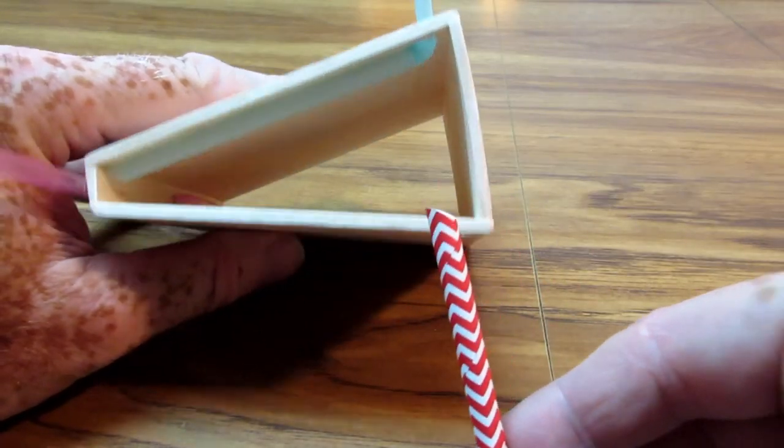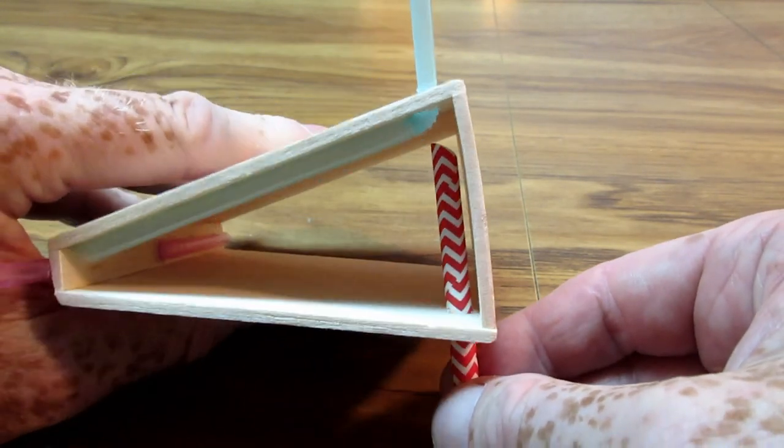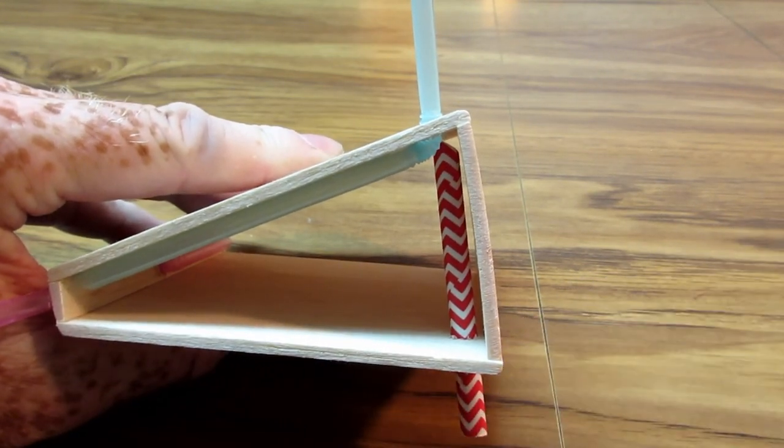A standard vent is provided, shown by the red and white straw, which is used only during filling. It is plugged during flight.